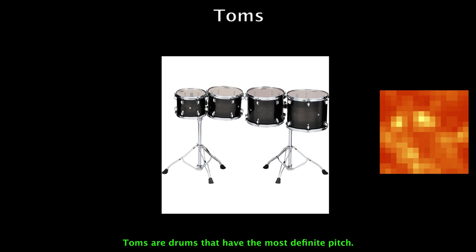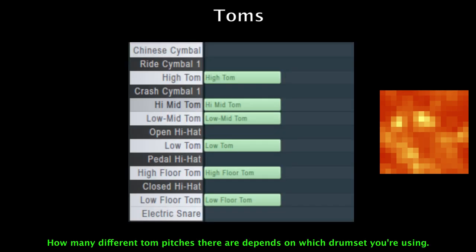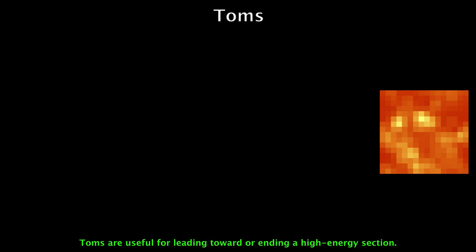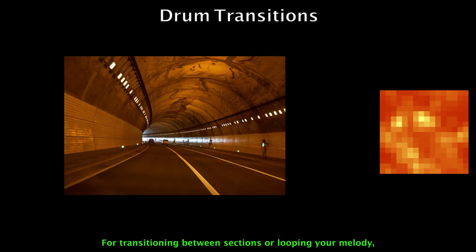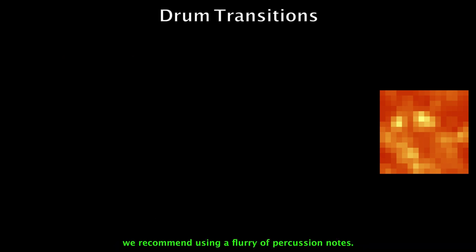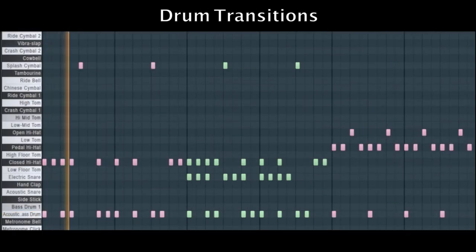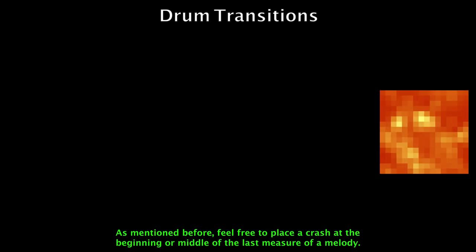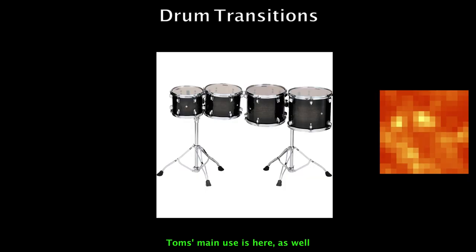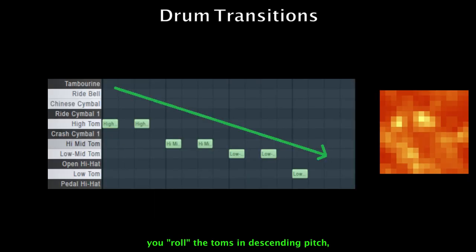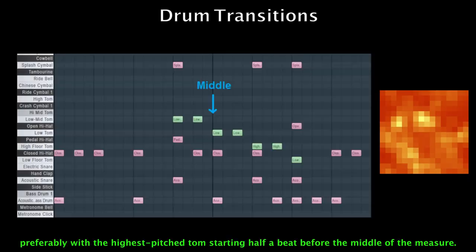Toms are drums that have the most definite pitch. How many different tom pitches there are depends on which drum set you're using; generally there will be four. Toms are useful for leading towards or ending a high energy section. For transitioning between sections or looping your melody, we recommend using a flurry of percussion notes. Feel free to place a crash at the beginning or middle of the last measure of a melody. Roll your toms in descending pitch, preferably with the highest pitched toms starting half a beat before the middle of the measure.